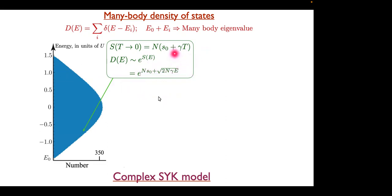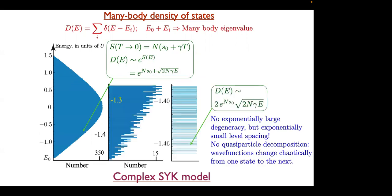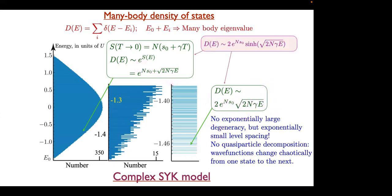The square root of E is simply the consequence of the linear temperature dependence of entropy — even a Fermi liquid would have that square root. But at very low energies, every random matrix has a square-root edge in the density of states. So at low energy there's a sqrt(E) edge, and at high energy there's e^{sqrt(E)}, and the cinch (sinh) is the simplest function that interpolates between these two behaviors. That turns out to be the exact answer.